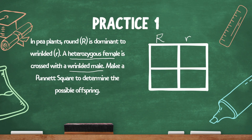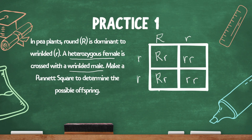The wrinkled male is showing the recessive trait, and in order to show that recessive trait, both alleles need to be recessive. Let's complete the Punnett square. Looking at each box, I get big R, little r; then little r, little r; then big R, little r; and in the last square, little r, little r. So there are two possible genotypes in the offspring: big R, little r, or little r, little r.